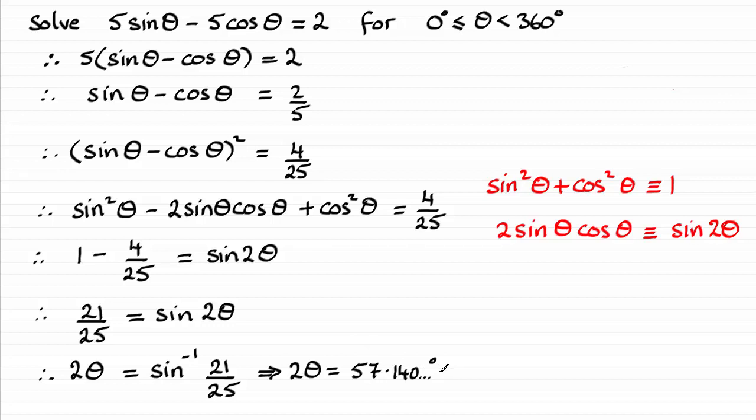Now it's from here on that we've got to take a lot of care. So what I'm going to do is just remove those identities there. And this is the reason why I'm not wild about this particular method. If we were to look at this equation here and work backwards, if we were to square root both sides, sinθ - cosθ could equal plus or minus 2/5. But we've seen that it's a positive value only.